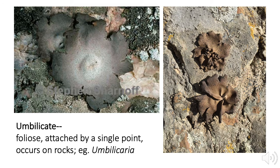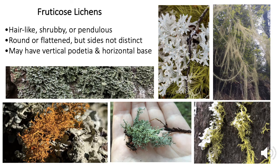Another special kind of foliose lichen is the umbilicate lichen, which is attached to the substrate — usually a rock — by a single central stalk underneath, sort of like an umbilical cord. That's why they have that name. The most well-known one is called, appropriately, Umbilicaria.